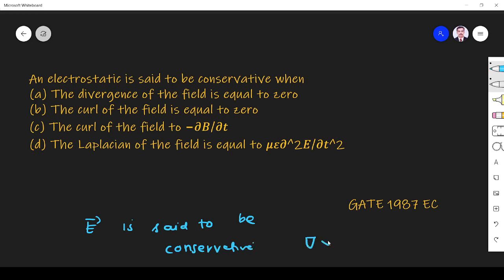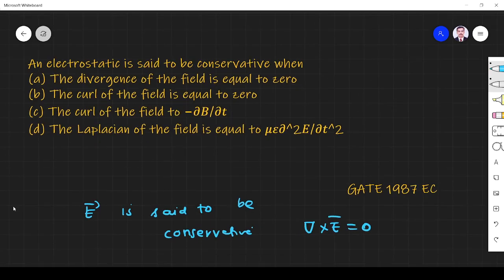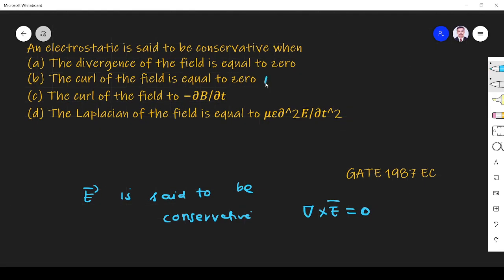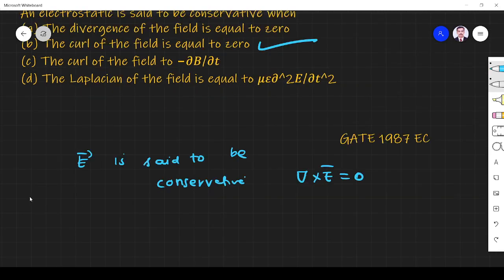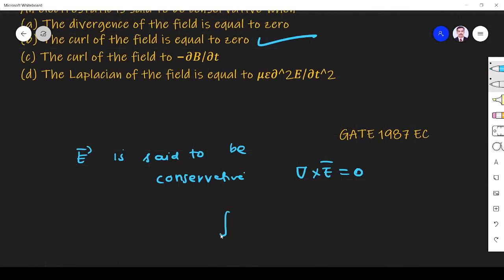If del cross E equals zero, that is, the curl of the electric field equals zero, then option B is the right answer. The equivalent integral form is closed integral E dot dl equals zero. In differential form, the condition for E to be conservative is del cross E equals zero.